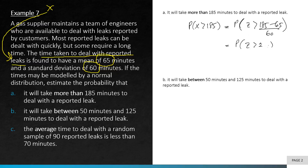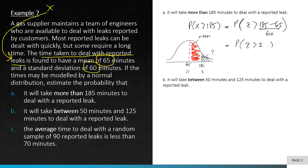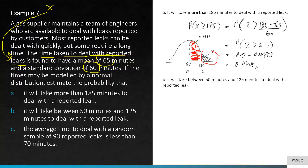Look at your normal distribution table for z = 2; you get the probability 0.4772. Sketch the distribution — the area from the mean to z = 2 is 0.4772 (shaded red). But we want the area beyond 185 minutes, so we take: 0.5 − 0.4772 = 0.0228.